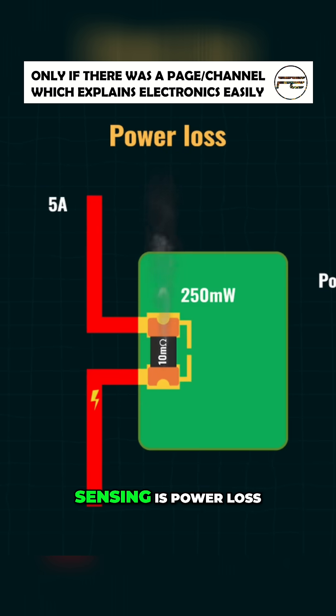One drawback of shunt-based sensing is power loss. Even though the shunt resistor is tiny, it is still in the path of the main current. At high current, it can generate heat and waste power.